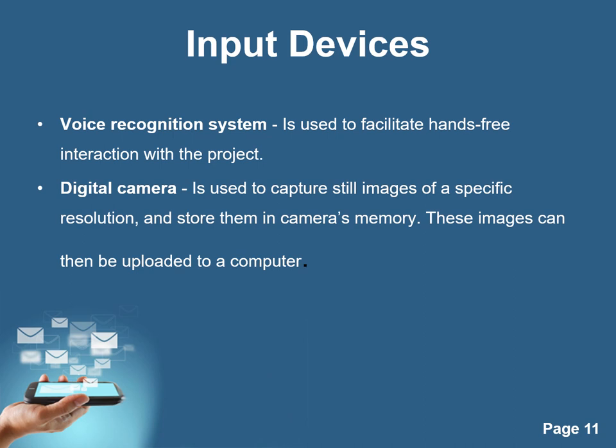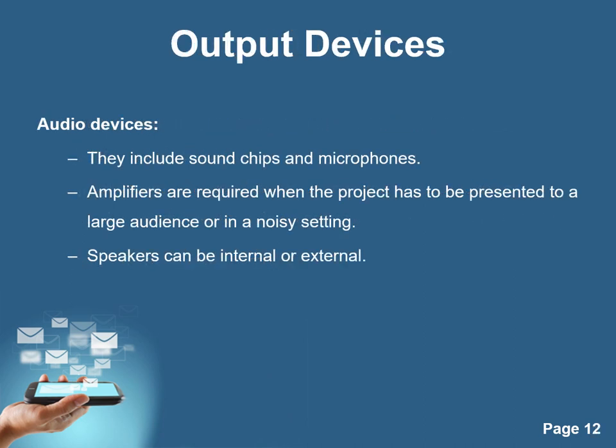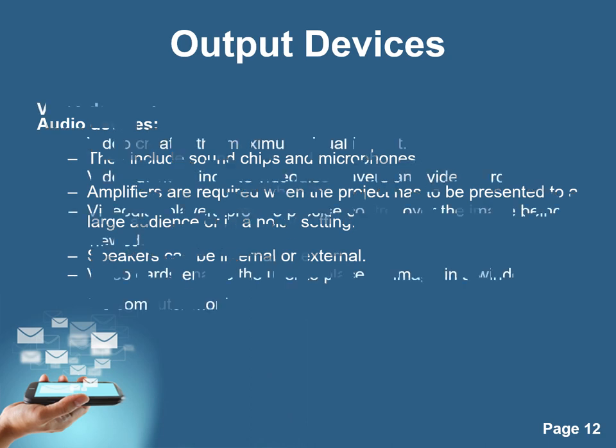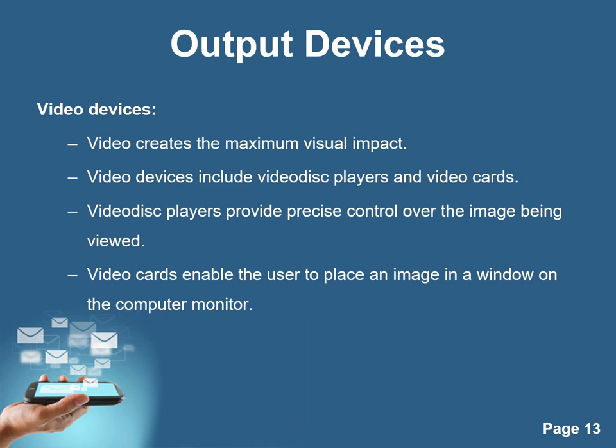These images can then be uploaded to a computer. Audio devices include sound chips and microphones. Amplifiers are used when the project needs to be presented to a large audience or in a noisy setting. Speakers can be internal or external. Video aids the maximum visual impact. Video devices include video disc players and video cards.